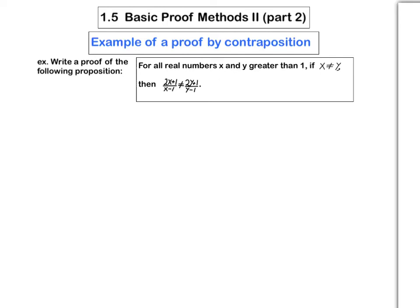In this video, we demonstrate how to do a proof by contraposition. Let's look at the following example. For all real numbers x and y greater than 1, if x is not equal to y, then 2x plus 1 over x minus 1 is not equal to 2y plus 1 over y minus 1.